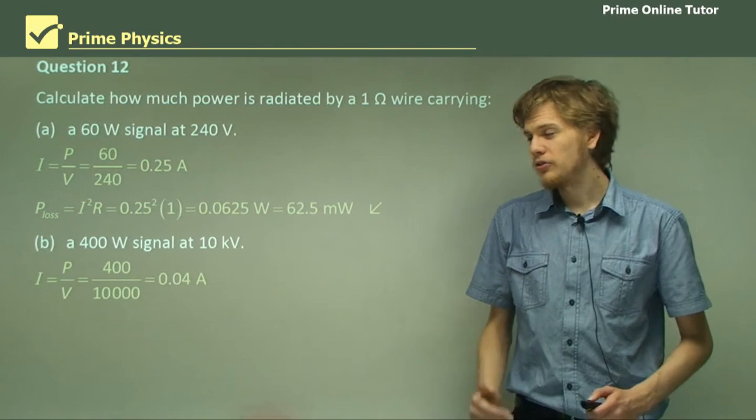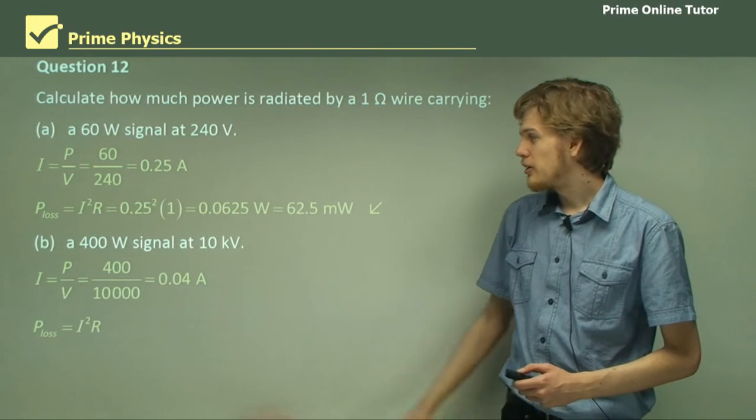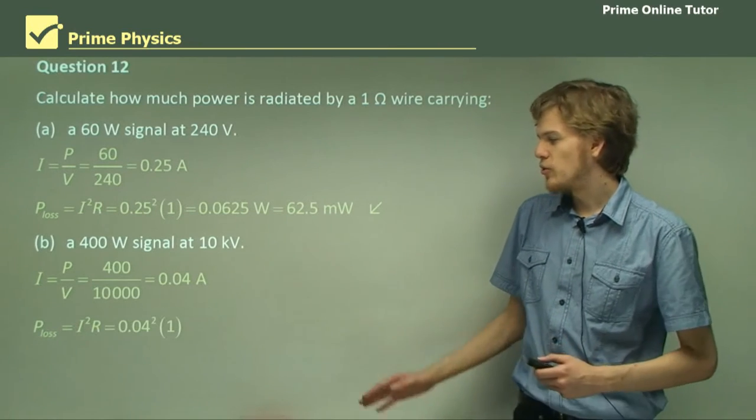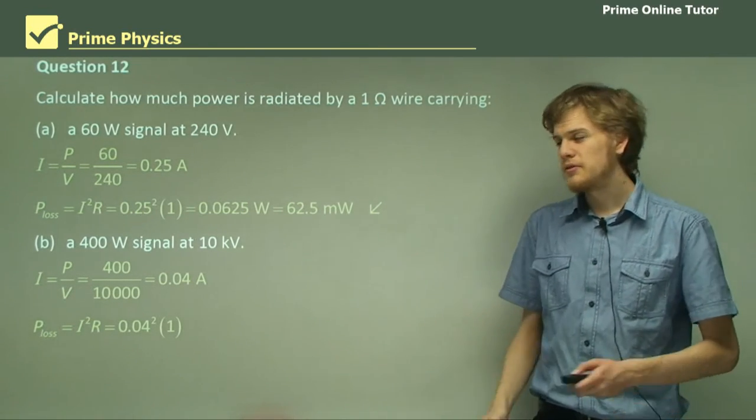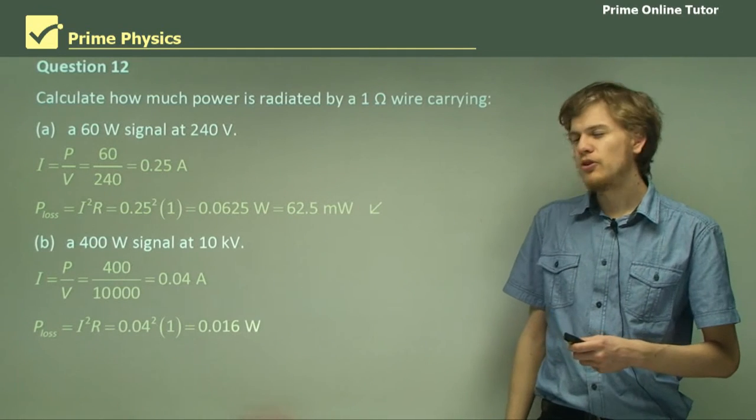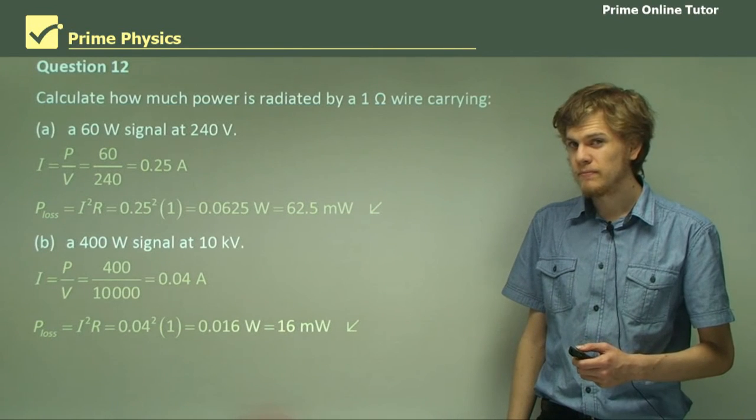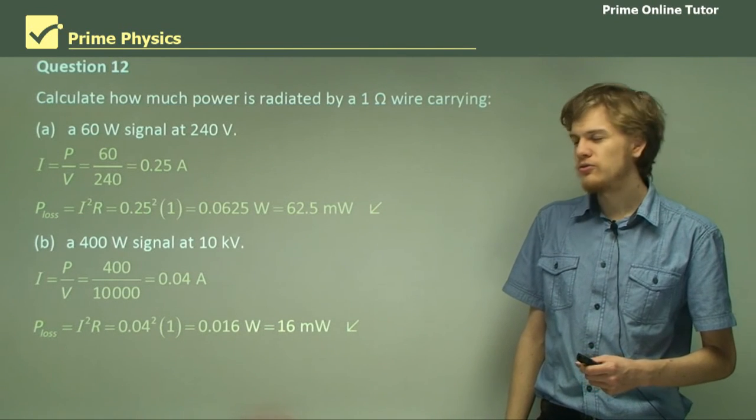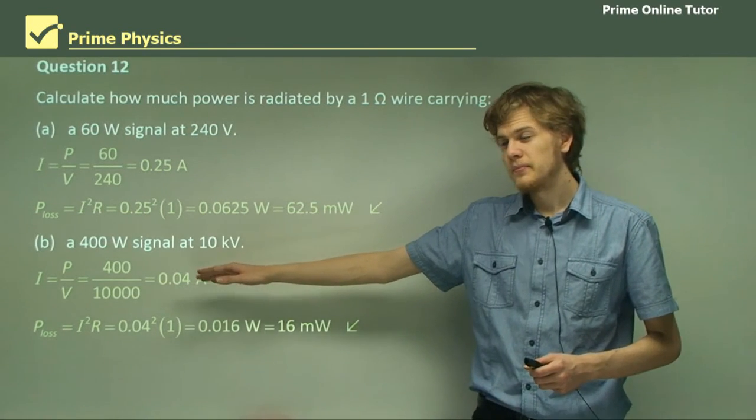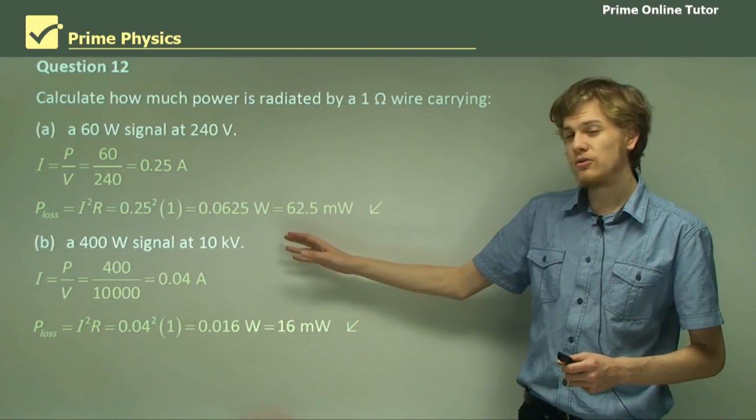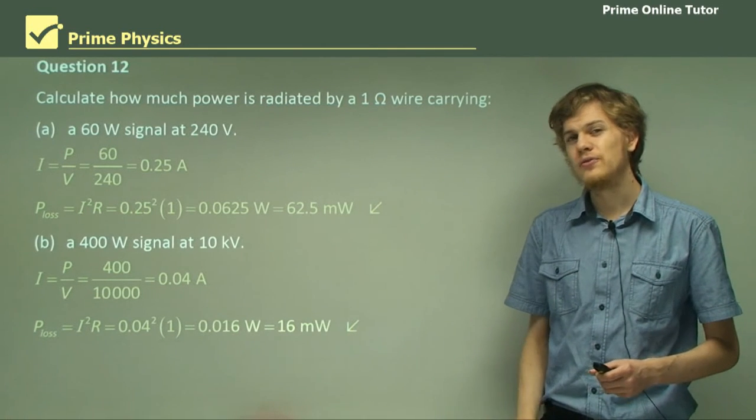So the power loss, as we'll see, will be even lower. I squared R gives us 0.04 squared times 1, which gives us an answer of 0.016 watts, or just 16 milliwatts. So we can see that even if we're transmitting signals with a lot of energy, as long as we transmit them at a high enough voltage, we can lose only a very small amount of energy.